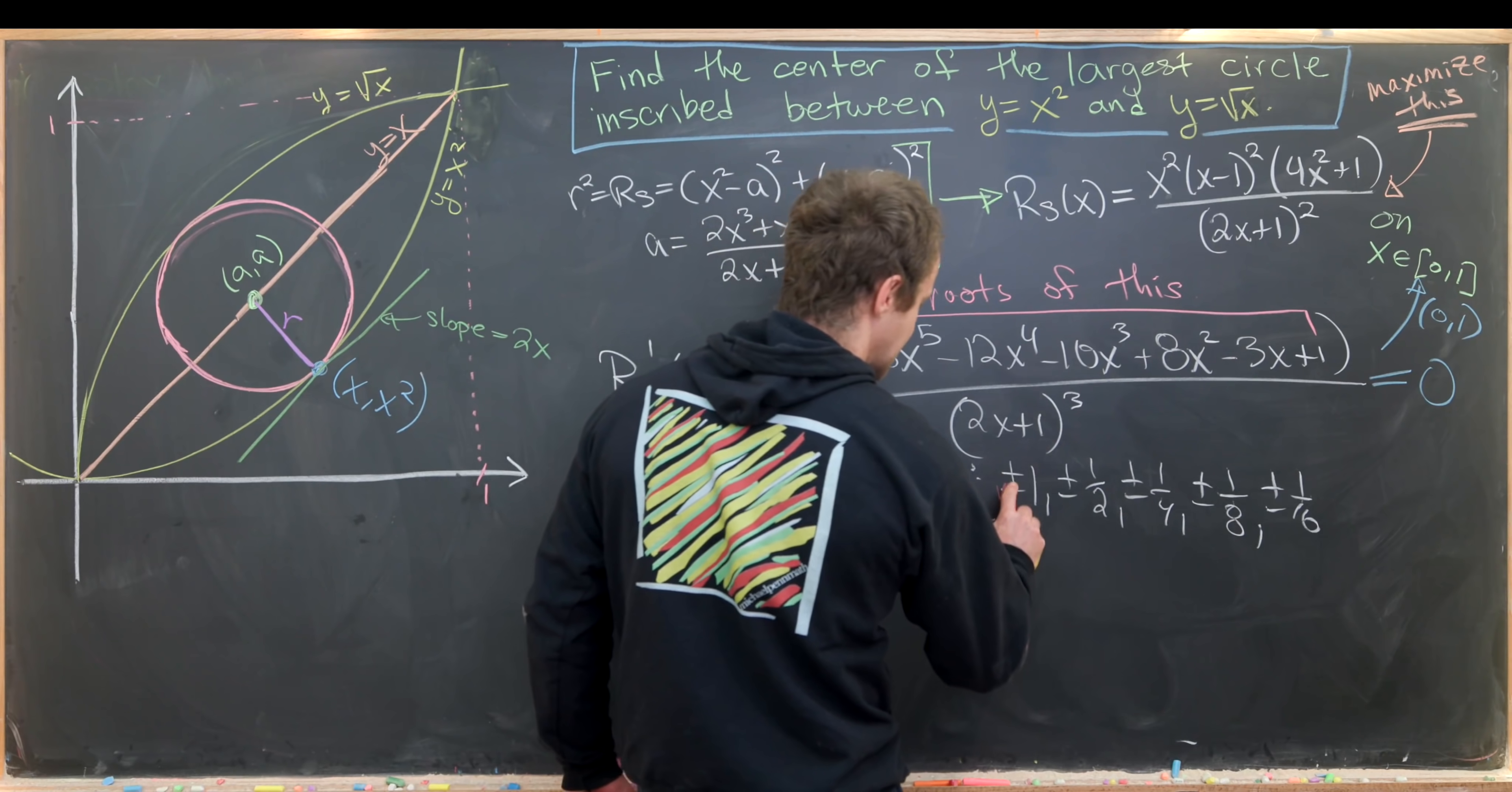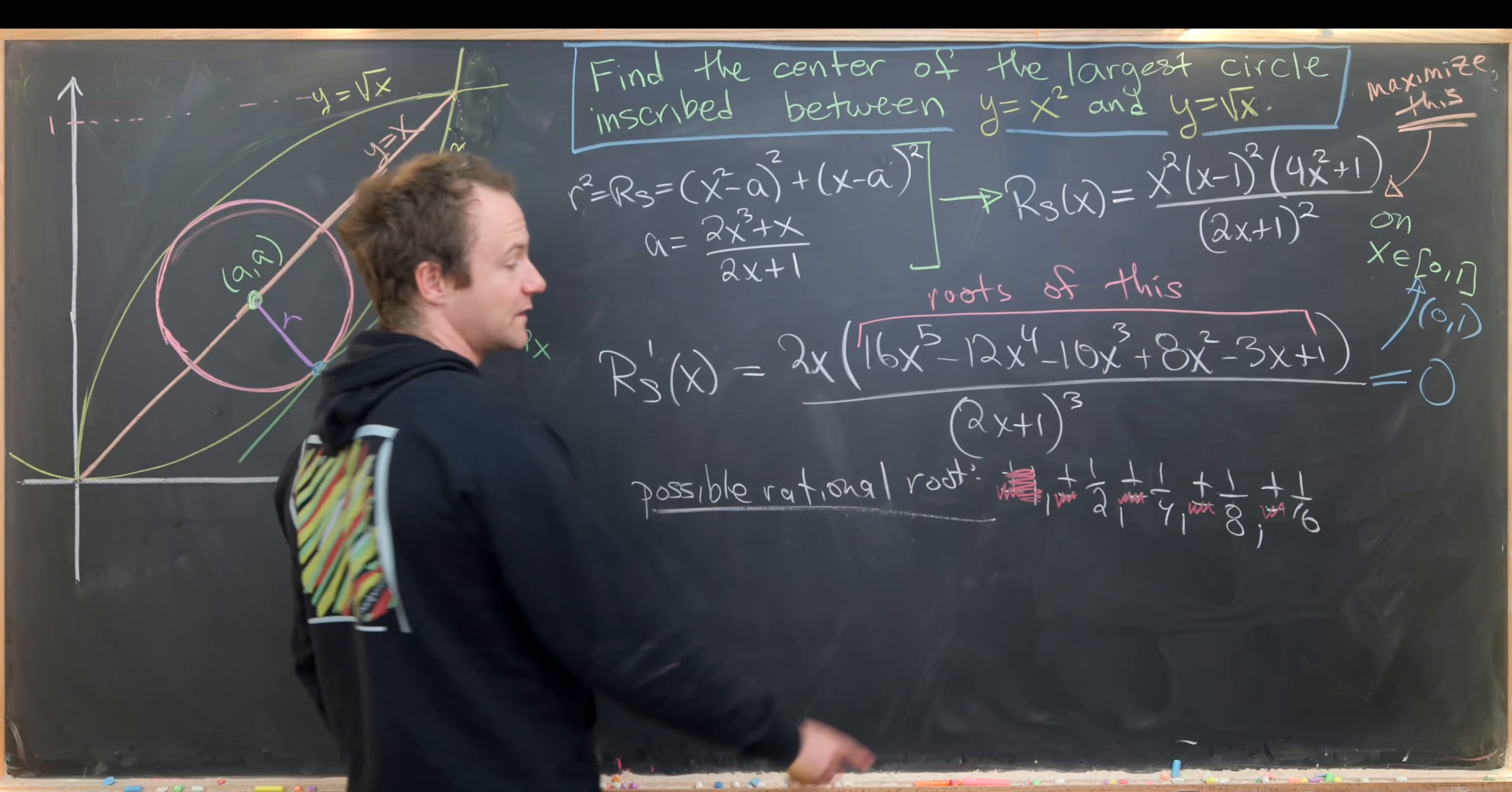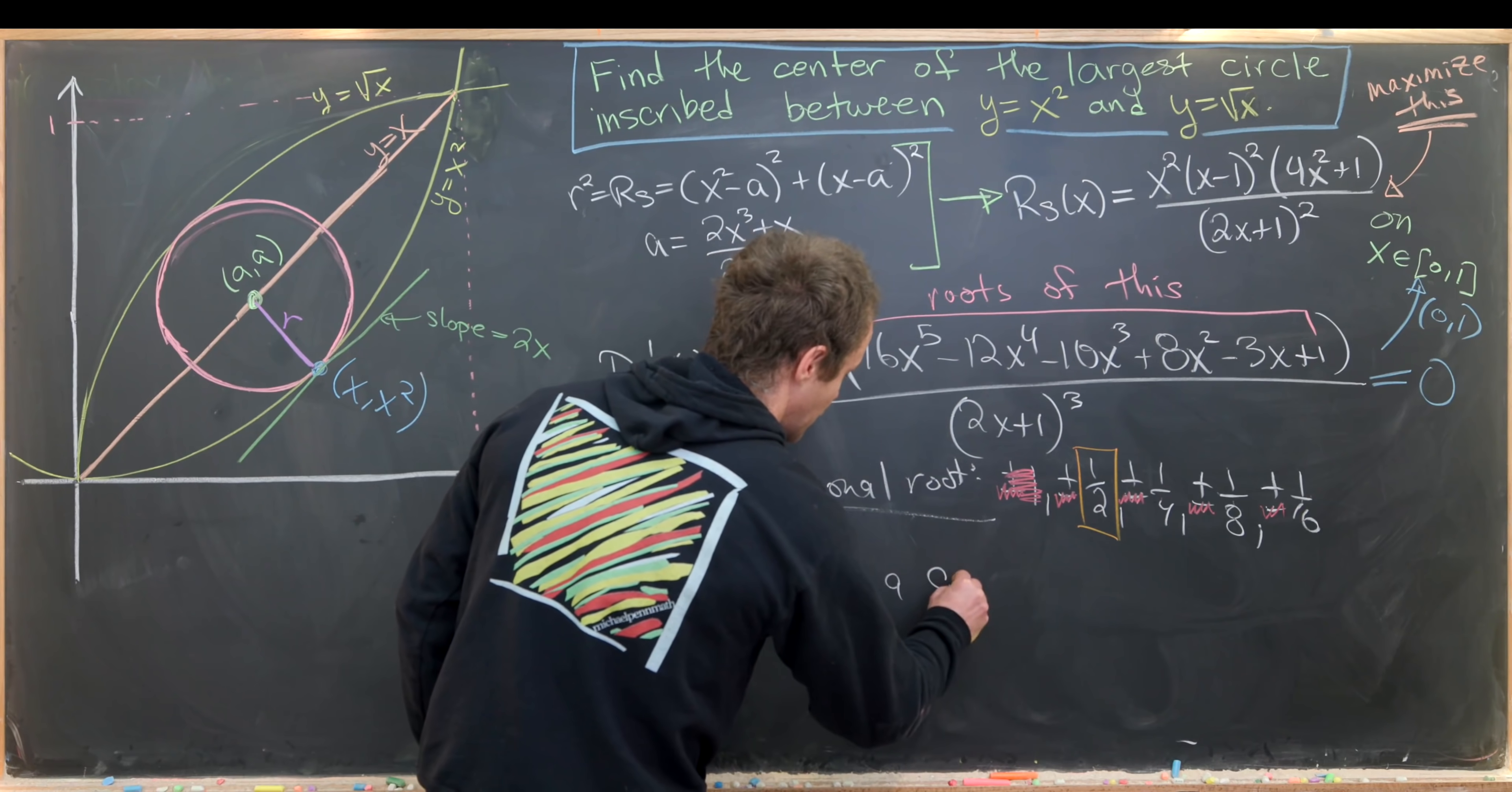Now it's just a game of trying these. Notice we're not interested in the negative values because those won't relate to actual radii. We're also not interested in x equals 1, because that gives us a minimum with radius zero. So we're only interested in the cases when x is half, quarter, eighth, and sixteenth. You'll have to try those one at a time. What you'll see is that x equals one half is one of the roots of this numerator, which tells us x equals one half is a critical point.